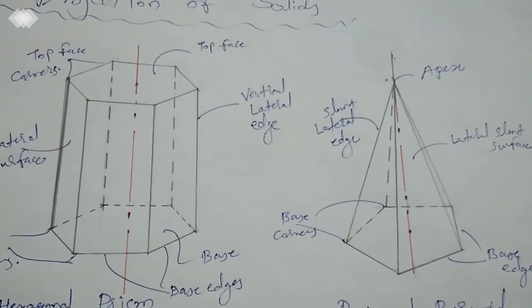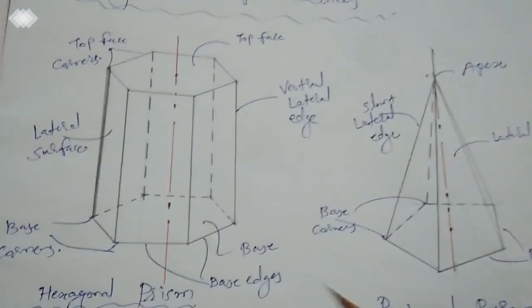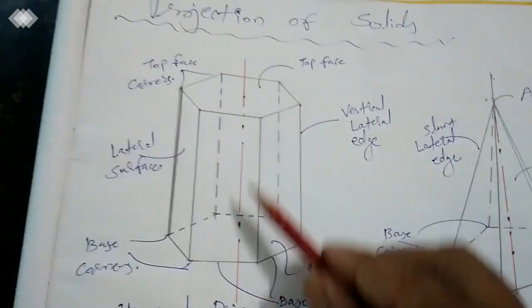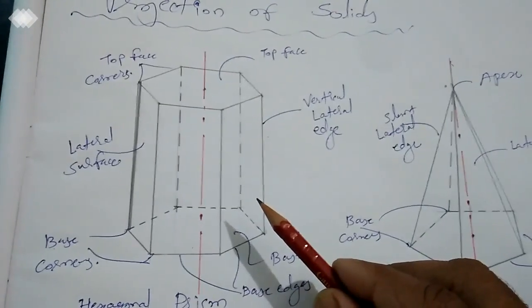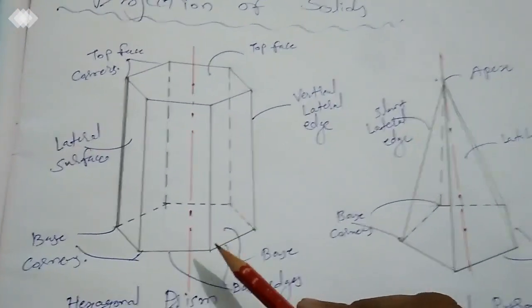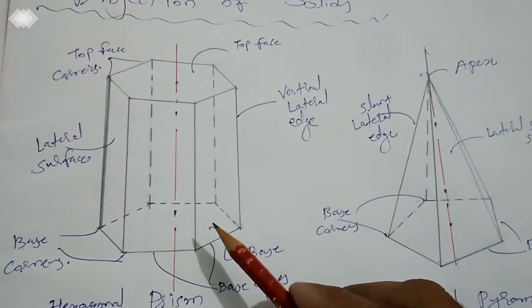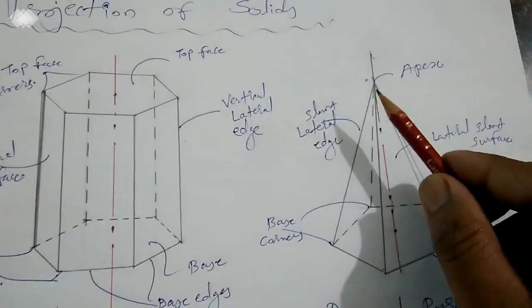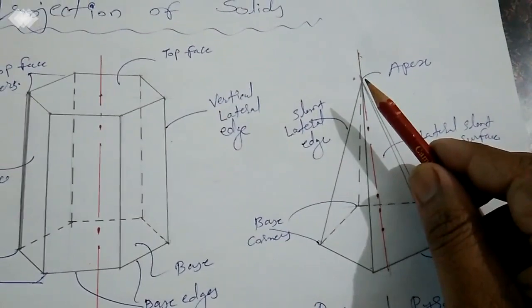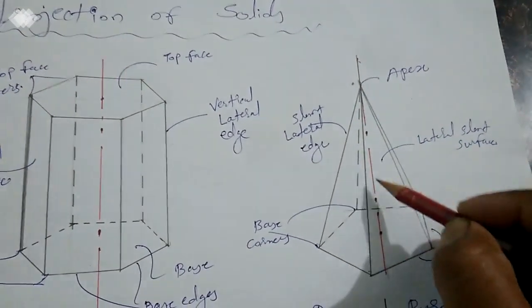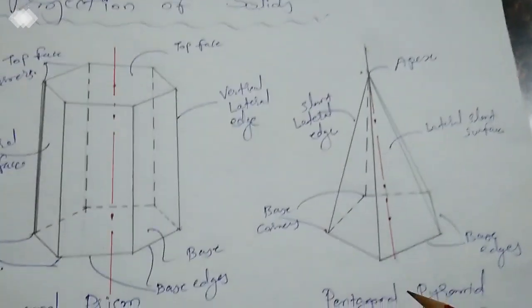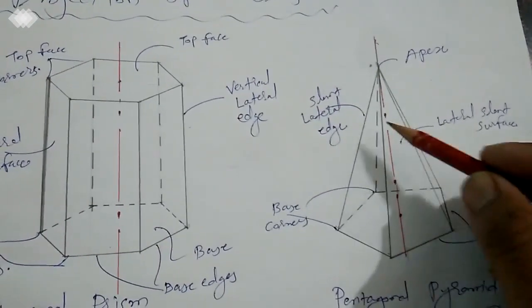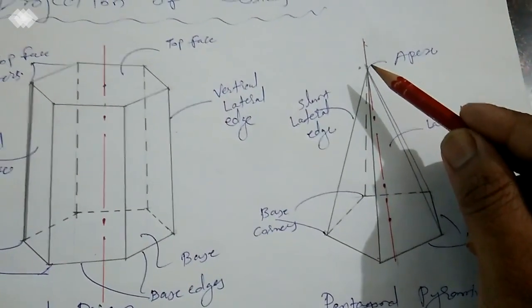Just see the figure. A prism is having a base as well as a top face. The name of the prism — whether it is hexagonal or pentagonal — is solely dependent upon the true shape of its base. Here I have drawn a hexagonal prism. In case of a pyramid, there is only a single base and it carries one apex. The apex is the point of intersection of all the slant edges of the pyramid. Slant edges run from the corners of the base and are concentrated at a single point called the apex.